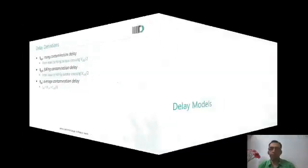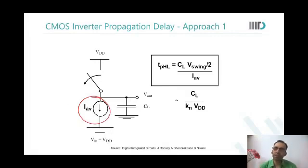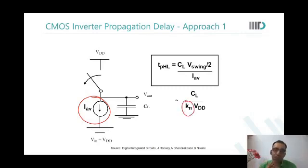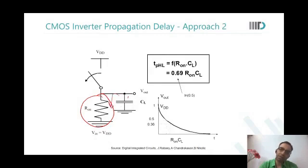Now we look at various models of delays. One simple model assumes that when the input changes there is an average current that flows and the capacitor discharges. This model requires finding the value of kn and related parameters for an accurate delay. Another model uses an effective R_on — when the device is on, the capacitor discharges through this resistor. That is another way to model propagation delays through an inverter.